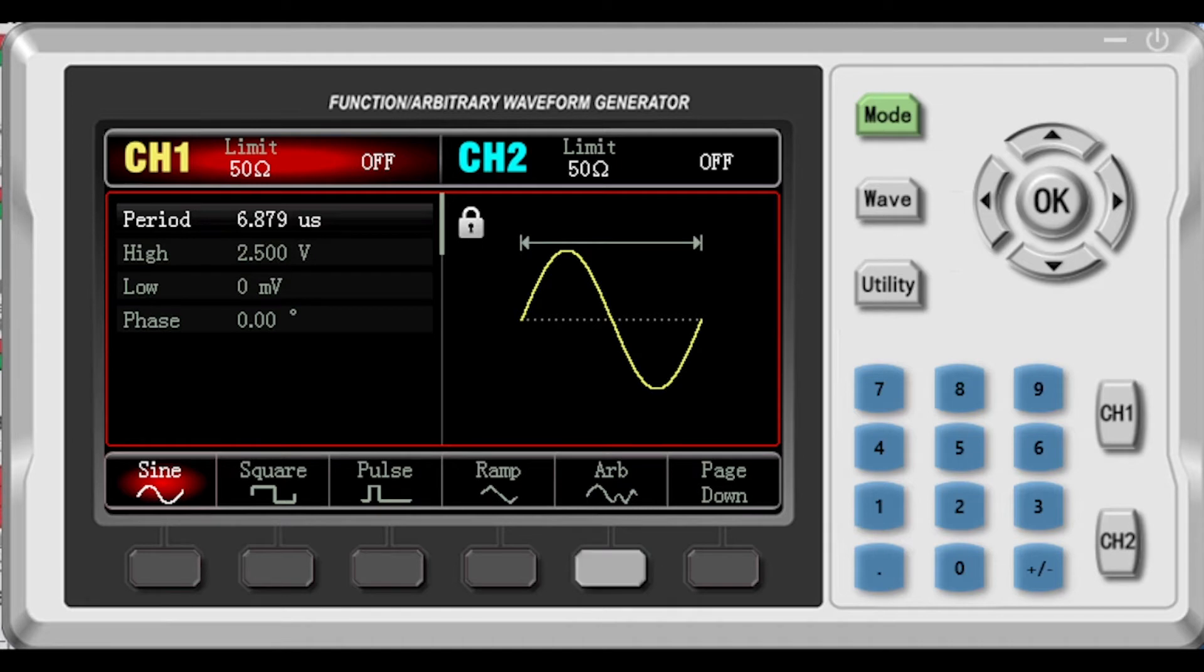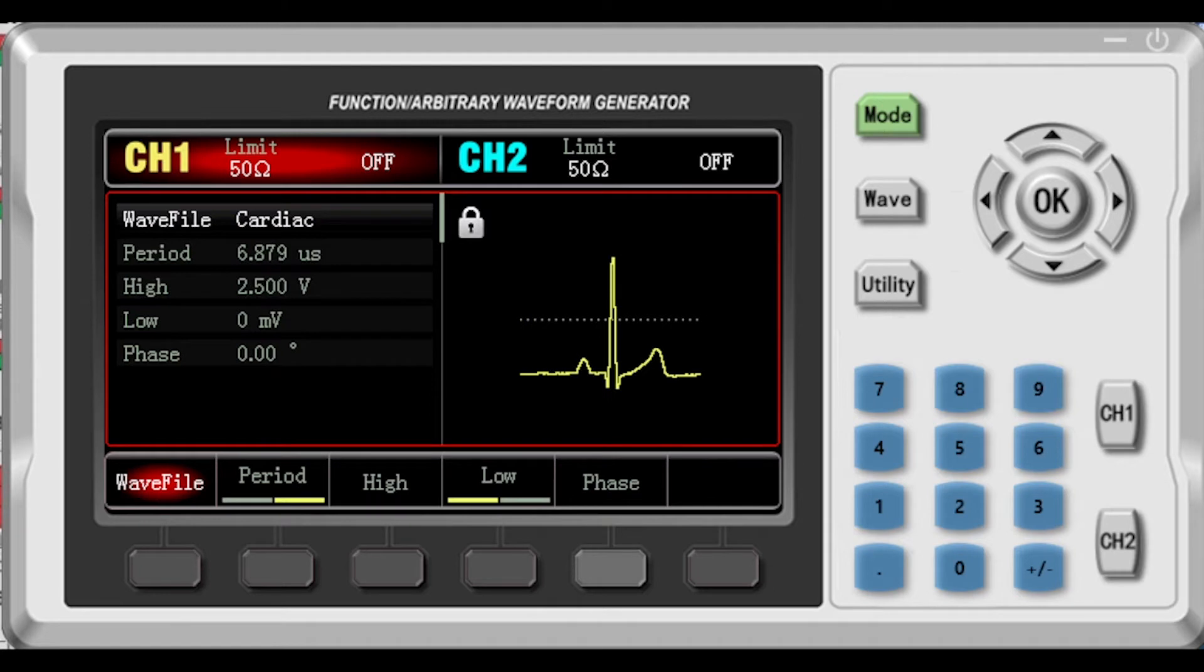Over here when I click that, so now we have, if you look on the left side of the screen under channel one, it says wave file cardiac, and on the right side it shows an EKG. We have about 16 different waveforms built in. So I can go through this list.